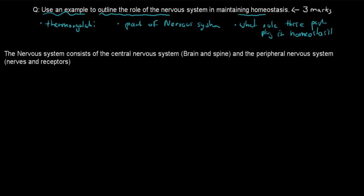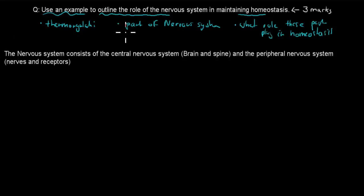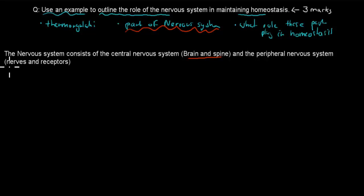The first sentence states: the nervous system consists of the central nervous system — the brain and spine — and the peripheral nervous system — nerves and receptors. Here I've given what makes up the nervous system: the brain and the spine are part of the central nervous system, and the nerves and receptors are part of the peripheral nervous system. That's my first statement.